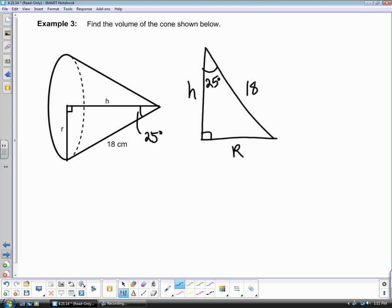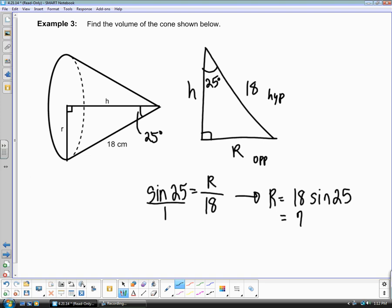So let's find our radius first. To do that, we have our opposite side and we have our hypotenuse to angle 25. So we're going to say sine of 25 equals your opposite over hypotenuse. Create a proportion and cross multiply. Your radius is going to be 18 times sine 25. When you calculate this, you're going to get a radius of around 7.61.